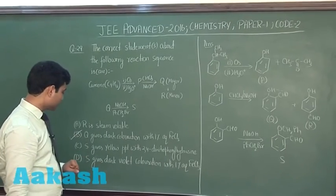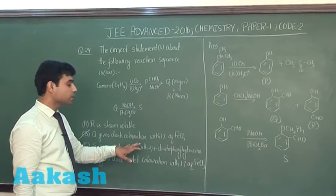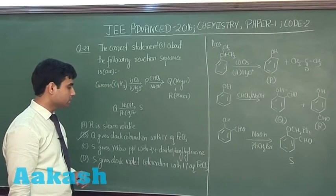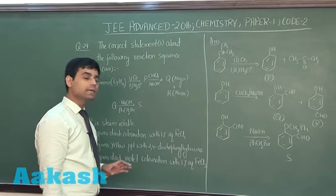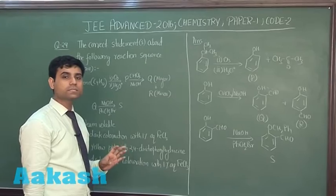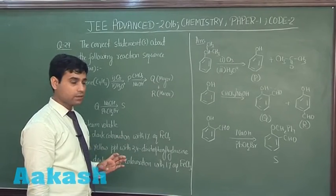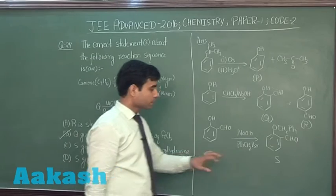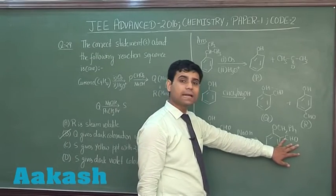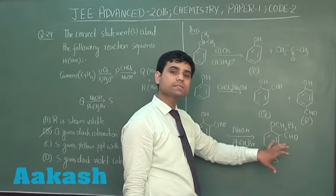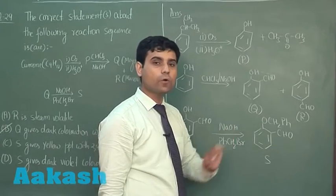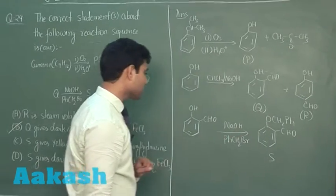Now let us check option C. S gives yellow PPT with 2,4 dinitrophenyl hydrazine. Aldehydic or ketonic groups give us 2,4-DNP test. We have S here. In case of S, we have aldehydic group CHO. It will give us yellow precipitate with 2,4-DNP reagent. This is also true.